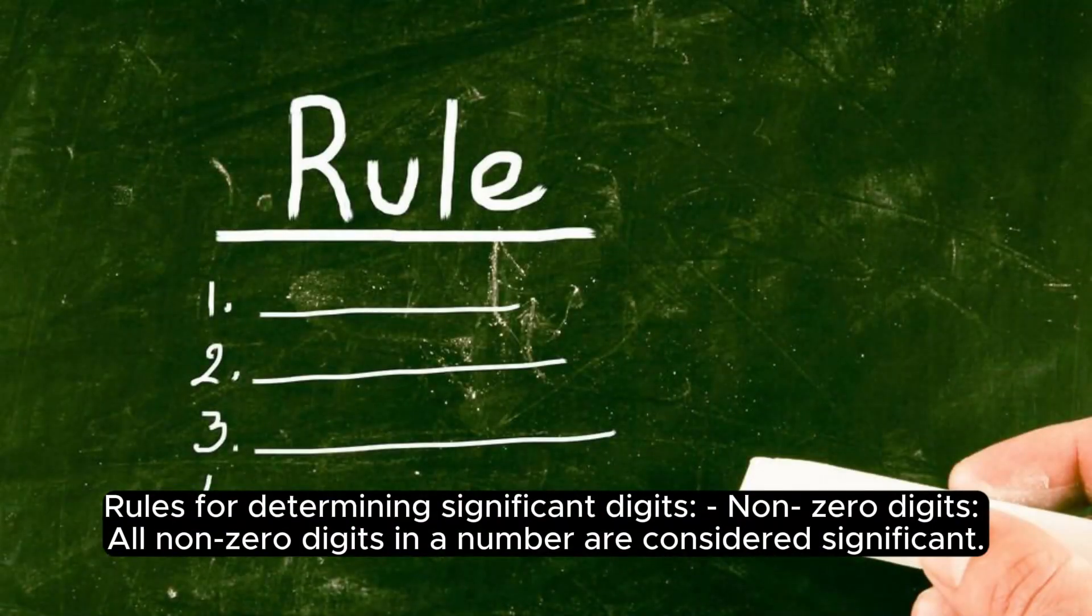Here's an explanation of significant digits. 1. Rules for determining significant digits. Non-zero digits: All non-zero digits in a number are considered significant.